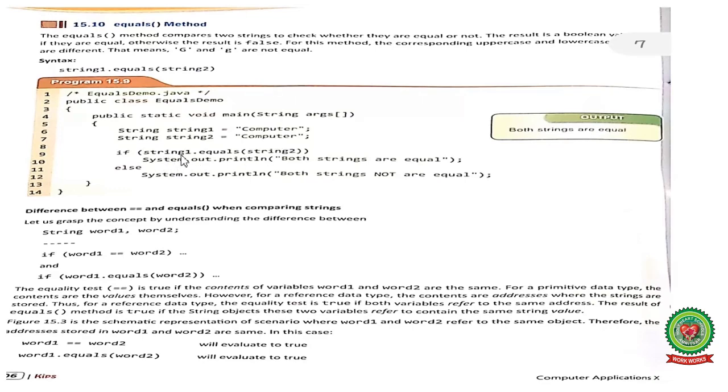So when I will write the function dot equals, if the condition will be true, then it will print both strings are equal, else it will print both strings are not equal. So here as the values are same, computer and computer, the output is both strings are equal.